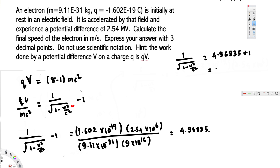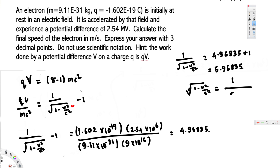Adding 1 gives us 5.96835. Rearranging further, 1 minus v squared over c squared equals 1 over 5.96835. To get rid of the square root, we square both sides.